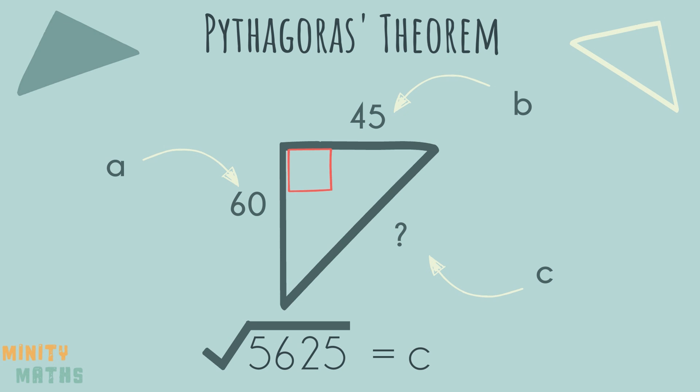Again, using your calculator or pen and paper, find the square root. So now we have found out that the length of side c is equal to 75.